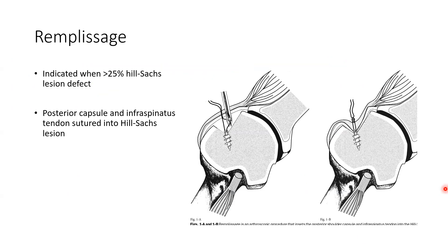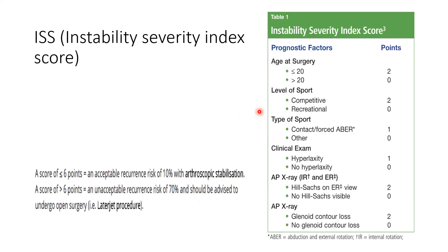The remplissage procedure is for the Hill-Sachs lesion defect. It is indicated when the lesion is more than 25%. An anchor suture is placed into the Hill-Sachs lesion and the infraspinatus tendon is pulled to fill the defect gap. This prevents the gap from engaging on the edge of the glenoid and causing the shoulder to lock unstably. An ISIS score of more than six points indicates a bony procedure is needed rather than arthroscopic stabilization.